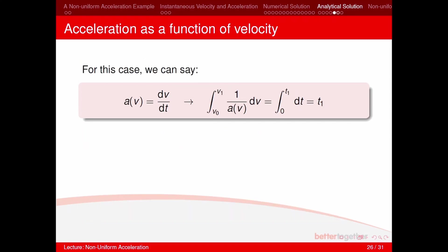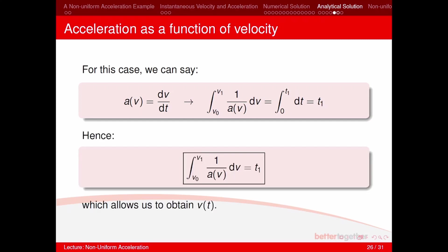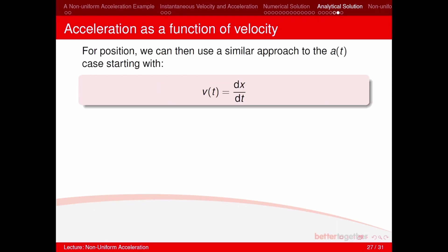We can also have acceleration as a function of velocity. We write a(v) = dv/dt and rearrange to get: t_1 = ∫[v_0 to v_1] (1/a(v)) dv. This allows us to obtain an equation for velocity with respect to time.